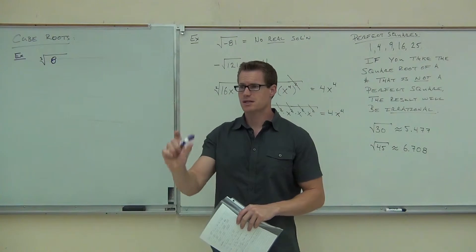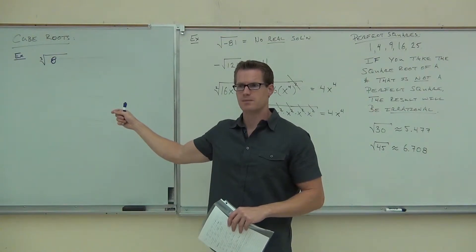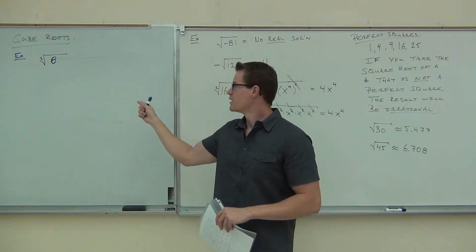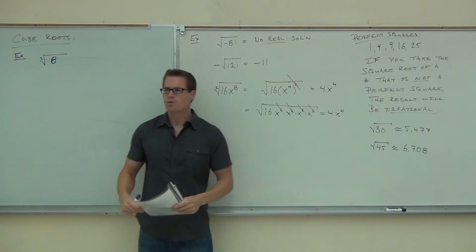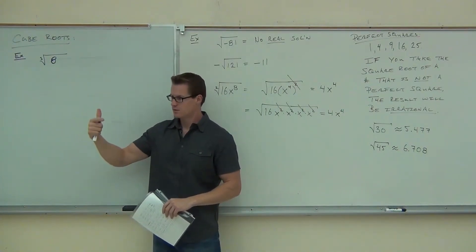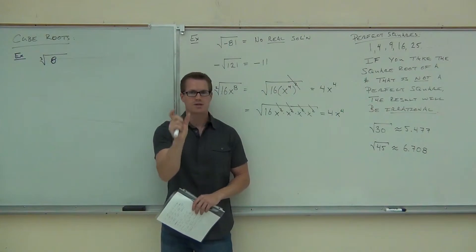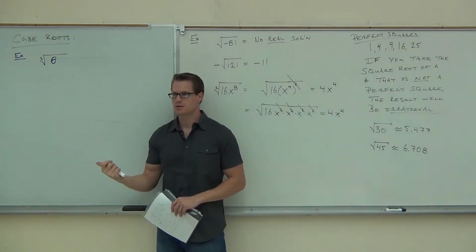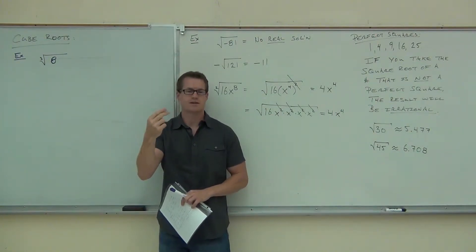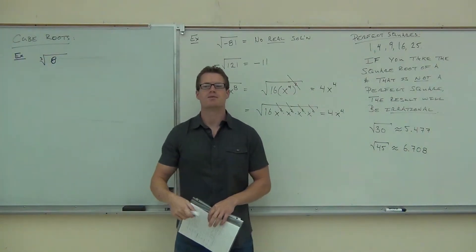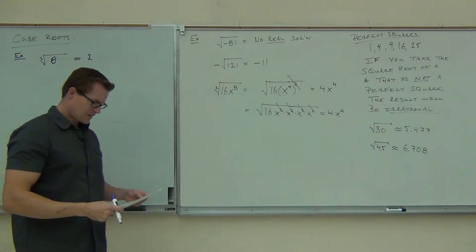A square root means a number times itself gives you the radicand. What is our radicand here? 8. The number inside the radical is called the radicand. What we're asking now, instead of a number times itself, is a number times itself times itself — that's three times. What number times itself 3 times gives you 8? 2, because 2 times 2 times 2 is 8. So the cube root of 8 equals 2.